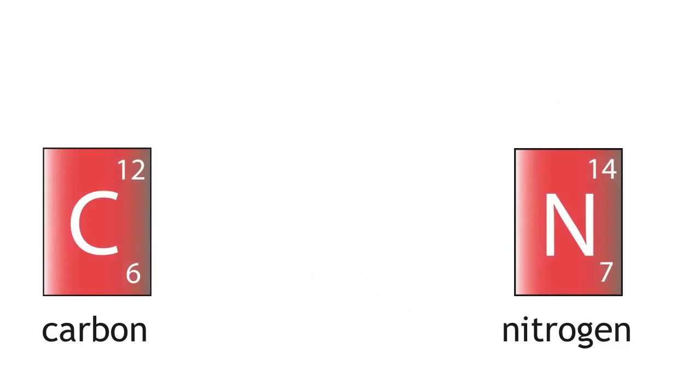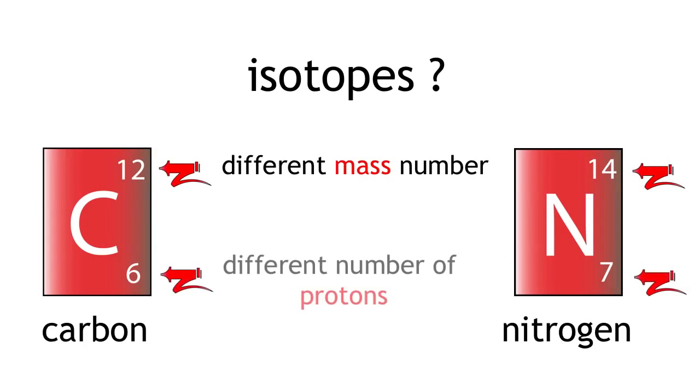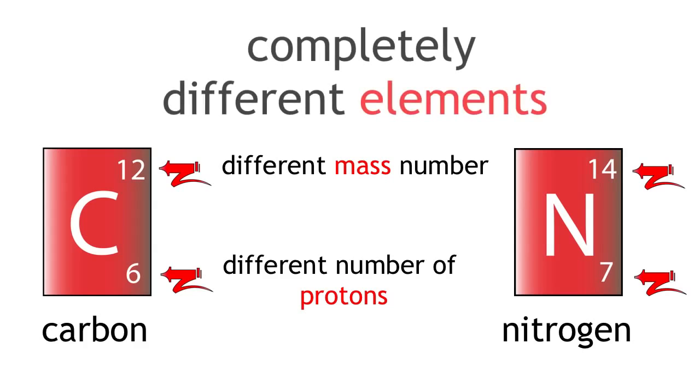If we look at carbon and nitrogen, are they isotopes? They have different mass numbers but they also have a different number of protons. Therefore, they are not isotopes. They are completely different elements.